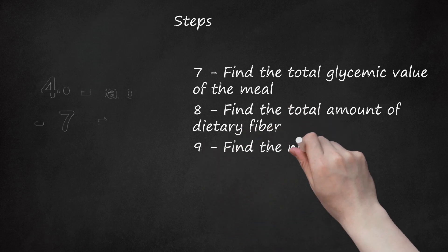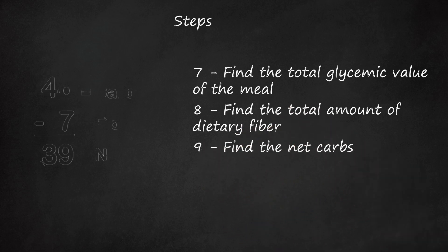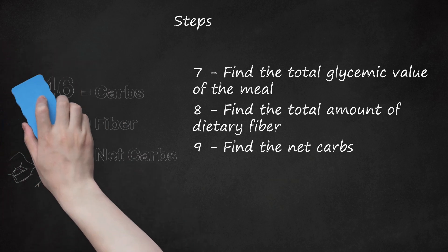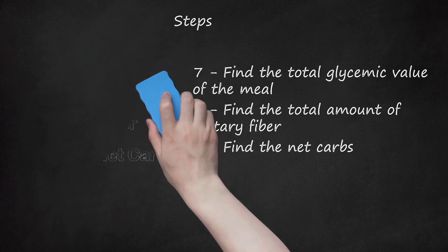Step 9: Find the net carbs. Take the total amount of carbs in the meal found in step 2 and subtract the total amount of dietary fiber from the last step. Example: 46 carbs minus 7 fiber equals 39 net carbs.